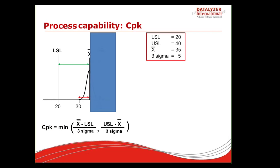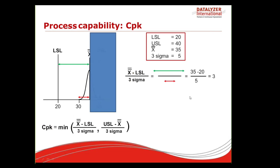In the graph, the lower side is the process average to the lower specification limit — the green divided by the red — which is (X-bar − LSL) / 3 sigma. In this case, the average is 35 and the LSL is 20, so: (35 − 20) / 5 = 3. We only look at half the total variation, from the process average to the specification limit. So the lower index, sometimes called CPL, is 3.